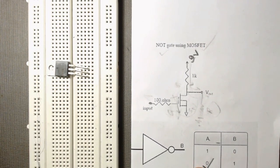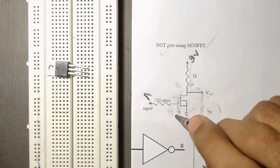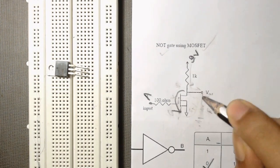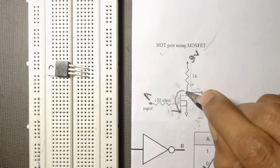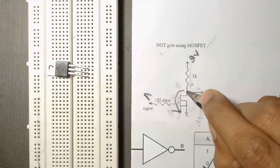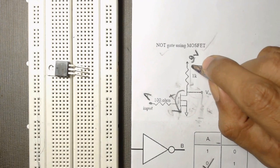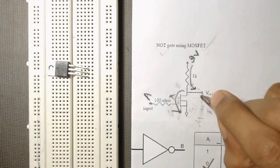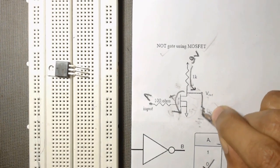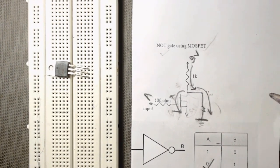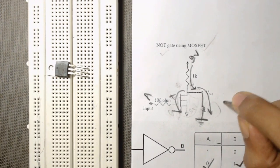If there is zero voltage at terminal A — here is the A terminal — if there is zero voltage, that means there is no gate voltage, so the MOSFET will not allow current to flow from drain to source. There will be no current through the MOSFET, so the entire current will flow through this loop, and we will get output at the output terminal.